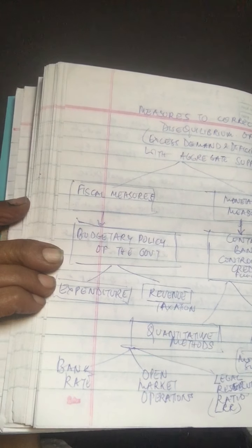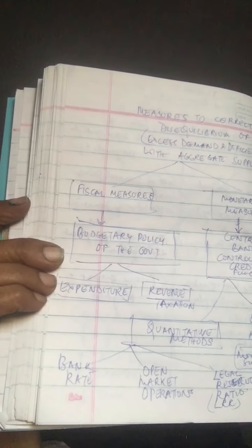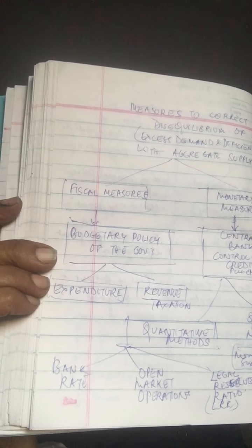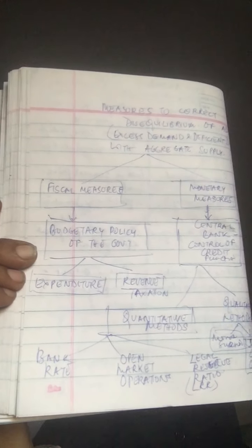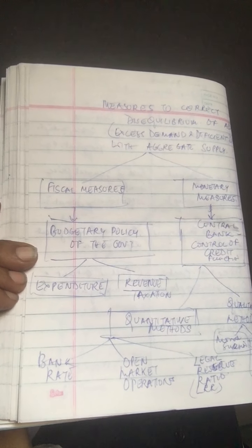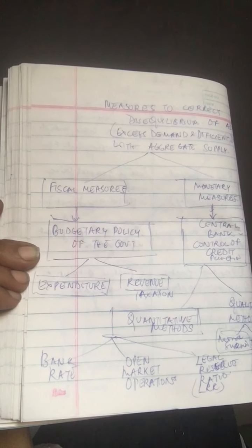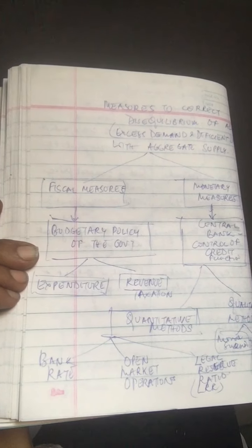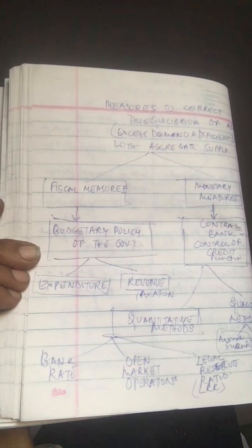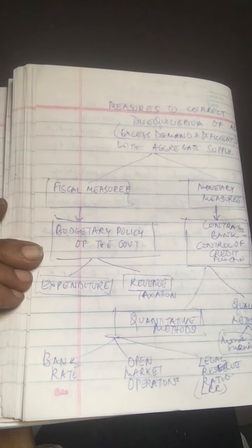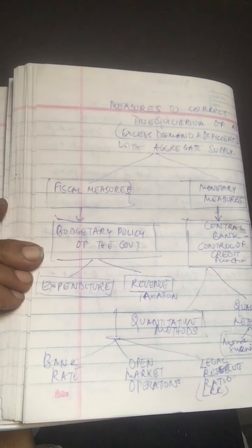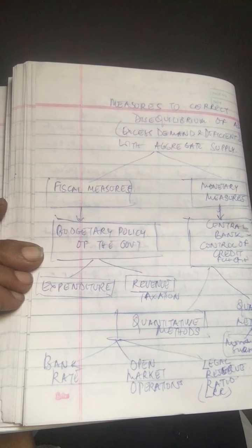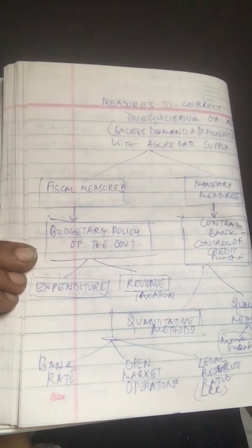Qualitative methods also address who should get subsidies and so on. In the quantitative measures we have bank rate, open market operations, and legal reserve ratio — which includes Cash Reserve Ratio (CRR) and Statutory Liquidity Ratio (SLR).